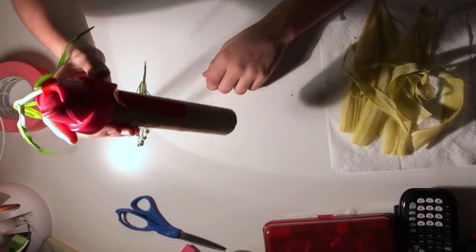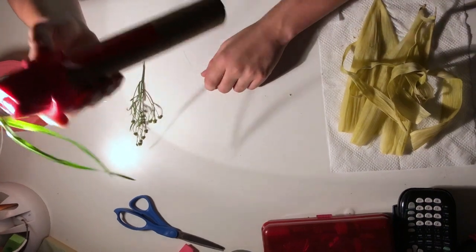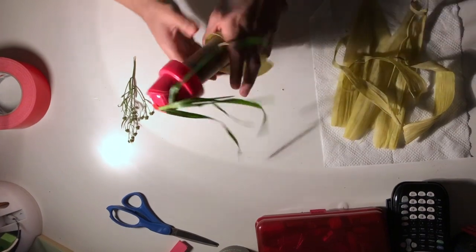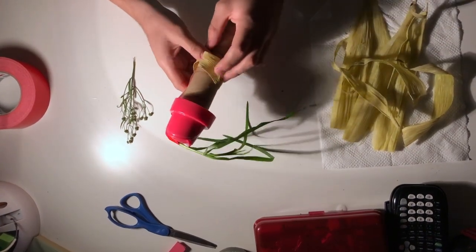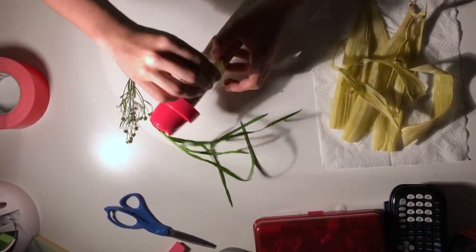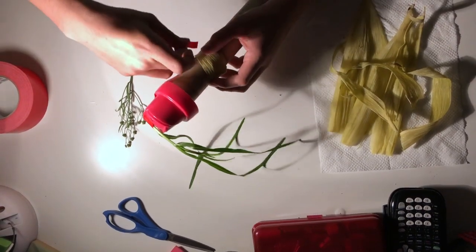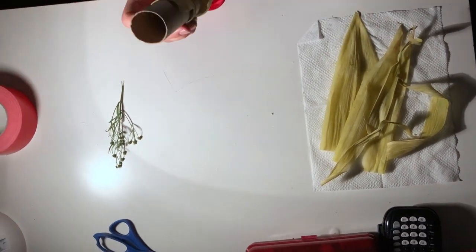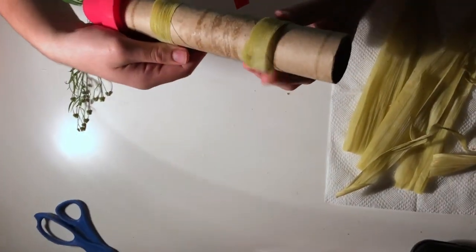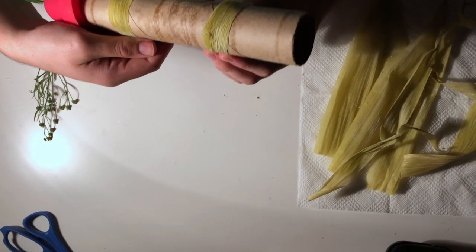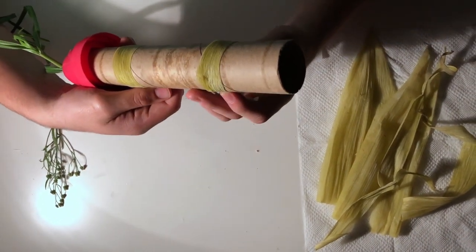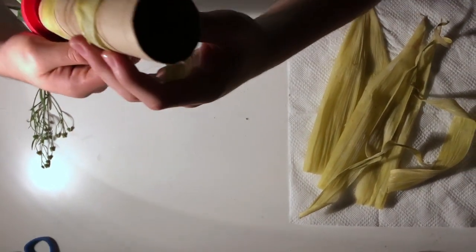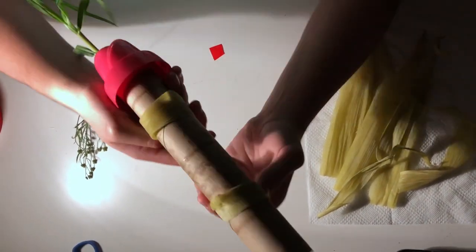Sometimes myelin sheath wraps around the axon. This is insulating material that allows information to travel faster. Note that not all neurons have myelin like this.